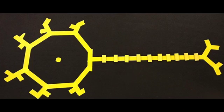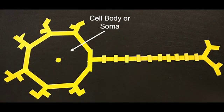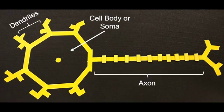A typical neuron is composed of four distinct regions: the cell body or soma, dendrites, axon, and presynaptic terminals.